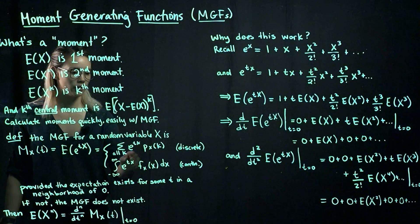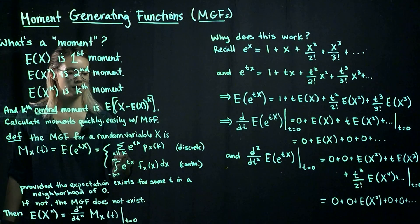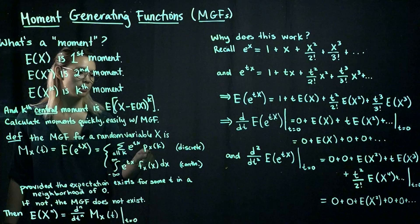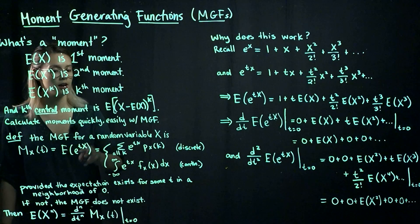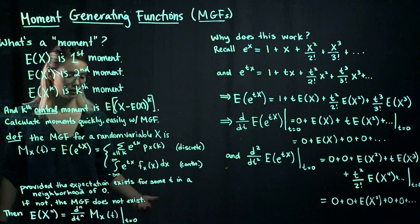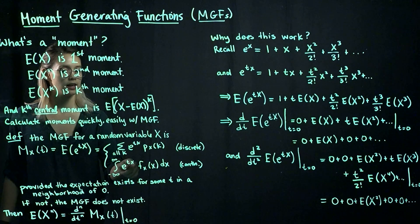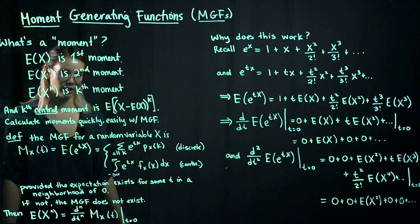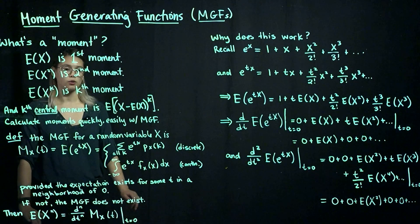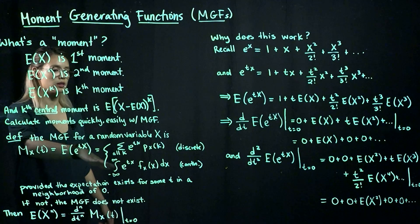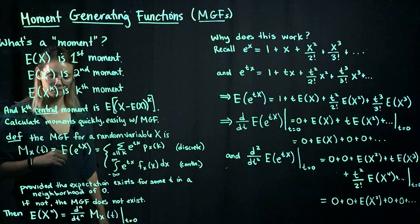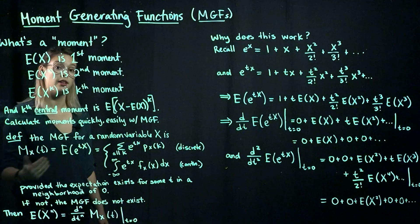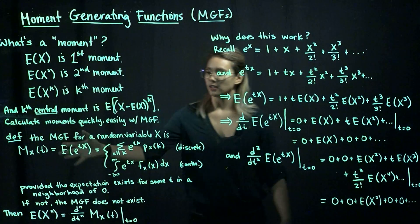We know that if we want to calculate the expected value of some function of x, we need to either take a sum or an integral, depending on whether we have a discrete or continuous random variable. In the discrete case, we calculate an expected value by taking the sum over all possible values the random variable can take on, and we have e to the tk times the pdf evaluated at that value k. If we have a continuous random variable, this expected value is an integral from negative infinity to positive infinity of e to the tx times its pdf, integrating with respect to x. We can only use this if these expected values exist — they need to exist for some t in a neighborhood of zero. If this expectation does not exist, then the MGF does not exist.